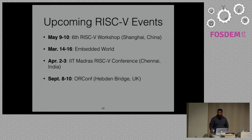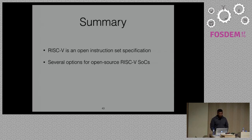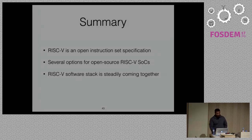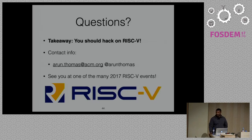In summary: RISC-V is an open instruction set specification — you can build proprietary or open source cores without worrying about getting sued. There are many open source cores available, including Rocket Chip and LowRISC among others. The RISC-V software stack is steadily coming together — things are getting upstream, distros are happening. We're looking for contributors across the hardware and software stack. The takeaway: you should hack on RISC-V, and I hope to see you at one of the many 2017 RISC-V events. Thank you.